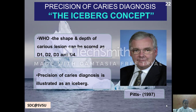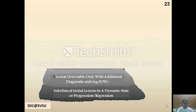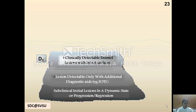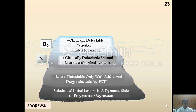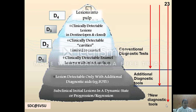Pitts introduced the iceberg concept at the WHO in 1997, which scored the shape and depth of caries lesions as D1, D2, D3 and D4. Subclinical initial lesions in a dynamic state of progression or regression form the base of the iceberg, followed by lesions detectable only with additional diagnostic aids. Above these are D1 — clinically detectable enamel lesions with intact surfaces; D2 — cavities limited to enamel; D3 — lesions in dentine; and D4 — lesions extending into the pulp. Lesions D1 to D4 are detectable by conventional methods, but subclinical initial lesions require additional new diagnostic tools.